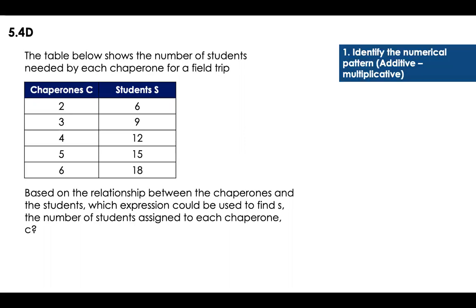In this case, first we're going to start identifying the numerical pattern, if it's additive or multiplicative. I'm going to use the first row. From two to get to six, if I add or if I multiply, can I add a number plus two to get equal to six? Can I multiply a number times two to get equal to six?